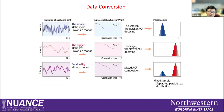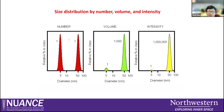Based on the correlation function, a quick decay means small particles; a slow decay means large particles. If you have both large and small particles, the correlation function shows a combined shape. You get the intensity distribution as raw data. Using the refractive index, you can convert this to volume or number distribution. For example, if you have two particles — one at 5 nm and one at 50 nm — in a 1:1 number ratio, their volume ratio is 1:1000, and the scattered light intensity ratio is 1:1,000,000. This explains why large particles can dominate the signal and small particles may be invisible in intensity mode.